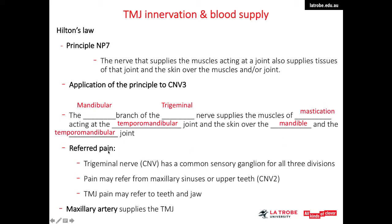Pain in the temporomandibular joint is related to the trigeminal nerve, which has a common sensory ganglion. This pain can arise from the maxillary region, involving the maxillary branch of the trigeminal nerve, or from the lower teeth or mandibular area, involving the mandibular branch of the trigeminal nerve. Blood supply to the TMJ is via the maxillary artery and its branches.